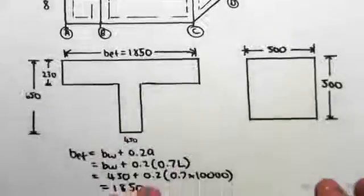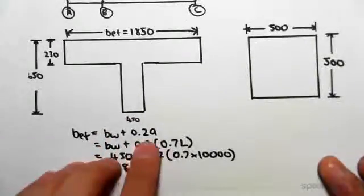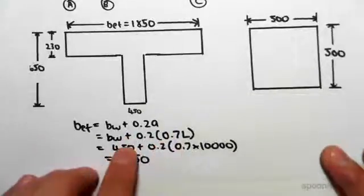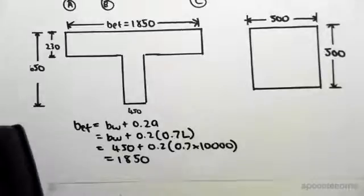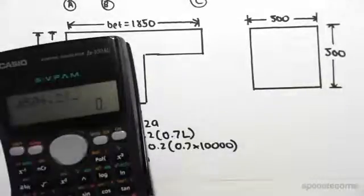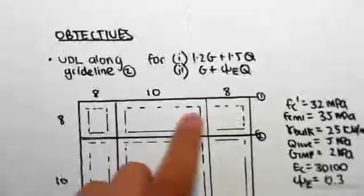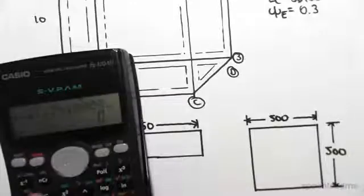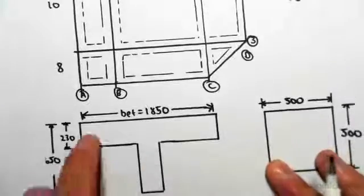The first thing we're going to do is find the effective width, which is BW plus 0.2A, where A is 0.7L for a continuous beam. So solving this: it's 450 plus 0.2 times 0.7 times the span. We're looking at the longer span, so 10 meters — 10,000 millimeters — giving us 1,850 millimeters for our effective width.